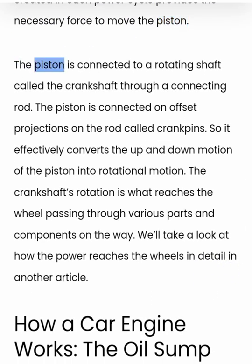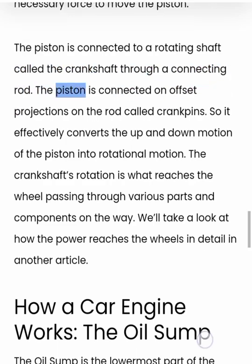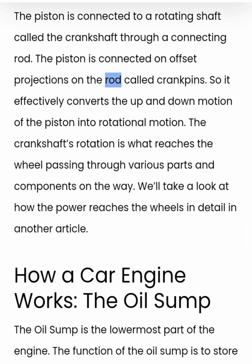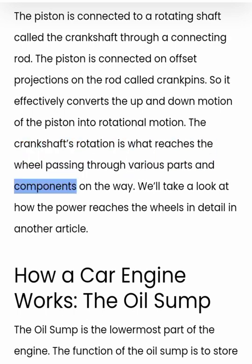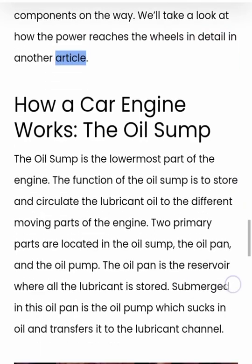The piston is connected to a rotating shaft called the crankshaft through a connecting rod. The piston is connected on offset projections on the rod called crank pins. So it effectively converts the up and down motion of the piston into rotational motion. The crankshaft's rotation is what reaches the wheel, passing through various parts and components on the way. We'll take a look at how the power reaches the wheels in detail in another article.